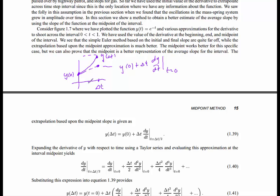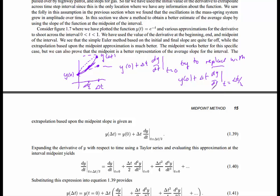A better approximation would be if you knew the derivative at the midpoint - the slope at the midpoint is a much better approximation of the slope from y(0) to y(delta_t). What you'd rather do is take dy/dt at t equals delta_t over 2. However, you don't know the derivative at the midpoint because you don't know where the function is, but you can approximate it.